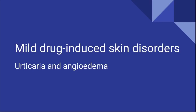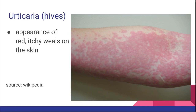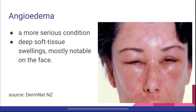In today's video we are going to be talking about urticaria and angioedema. Urticaria is also known as hives, and it is the appearance of red itchy wheals on the skin. Angioedema is a more serious condition in which there is deep soft tissue swelling, most notably on the face — around the eyes, on the lips, and similar areas.